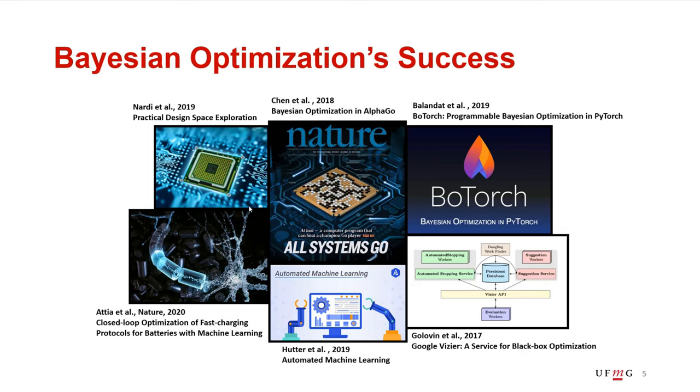Because of this approach and high performance, Bayesian optimization has been successfully applied to several different fields like hardware design, battery lifetime estimation, computer goals, even automated machine learning. And besides, even some large tech companies like Facebook and Google have started using Bayesian optimization to optimize their applications, and some even proposing their own frameworks for Bayesian optimization.